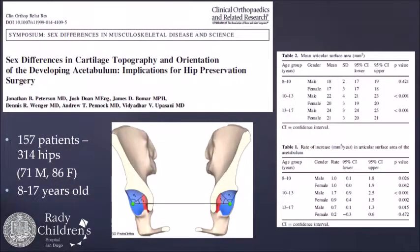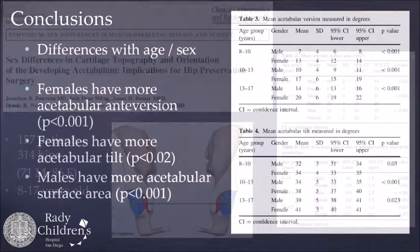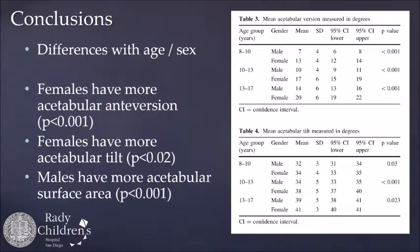We published the initial data on our control cohort, which was 157 patients with 314 hips. These patients all had pelvic CT scans performed by general surgeons for diagnoses such as appendicitis, and we went through their charts to ensure they didn't have any hip pathology. Their ages ranged from 8 to 17, and we found significant differences in those measures with age and sex. Females had more acetabular anteversion, females had more acetabular tilt, and males had a greater acetabular surface area — with changes across the age groups 8 to 10, 10 to 13, and 13 to 17.